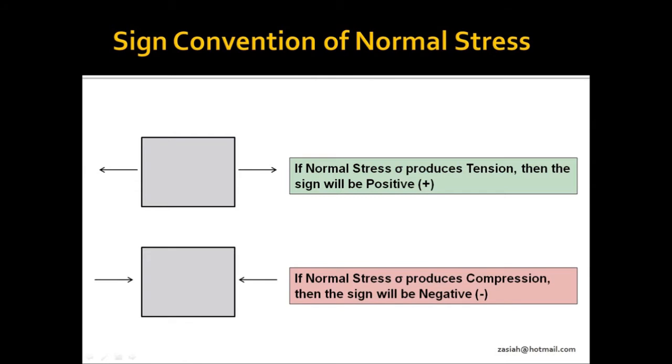If we want to determine the sign convention of normal stress, we have to first observe whether the normal stress produces tension or compression. If the normal stress produces tension, then the sign will be positive.